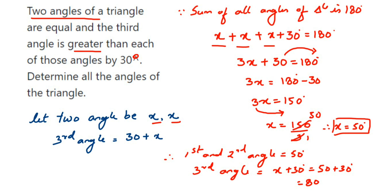So 50, 50, and 80. When you add it, 50 plus 50 is 100, 100 plus 80 is 180. You can cross-check the answer this way. I hope this question is clear. In case you have any other questions or doubts, you can drop a comment. Thank you so much for watching.